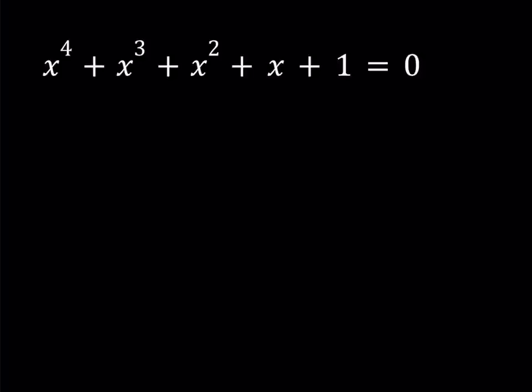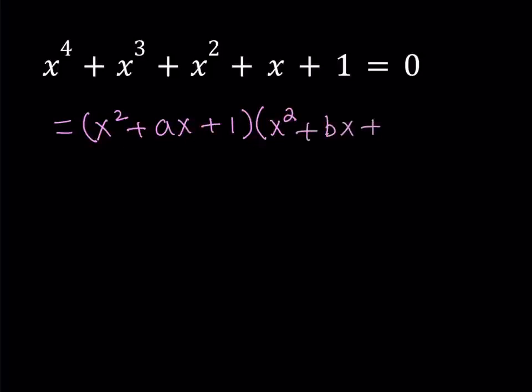I'm going to present two different ways here. The first method: I'm going to factor this equation. I don't know what the factors are, but I'm going to find them. I will write this equation as a product of two polynomials that are quadratic. They're going to look like this: x squared plus ax plus one is one of them, and the other one is going to be x squared plus bx plus one.